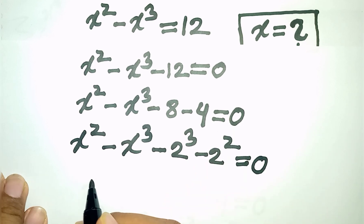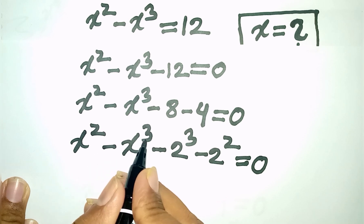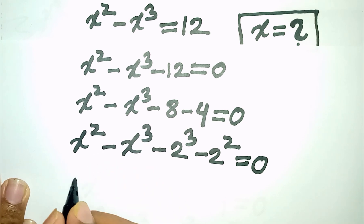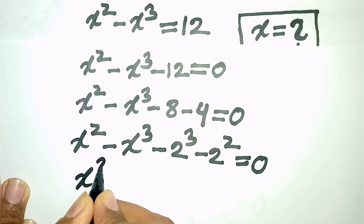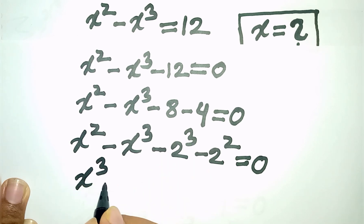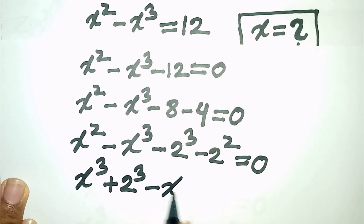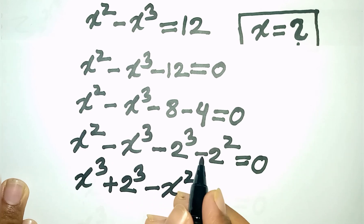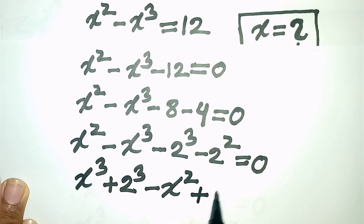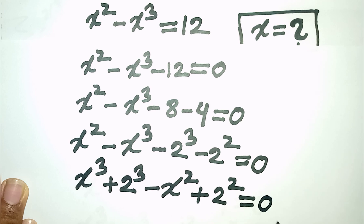Now we multiply by minus 1 on both sides. So we can write here: minus x³ becomes plus x³, minus 2³ becomes plus 2³, plus x² becomes minus x², and minus 2² becomes plus 2², equals 0.